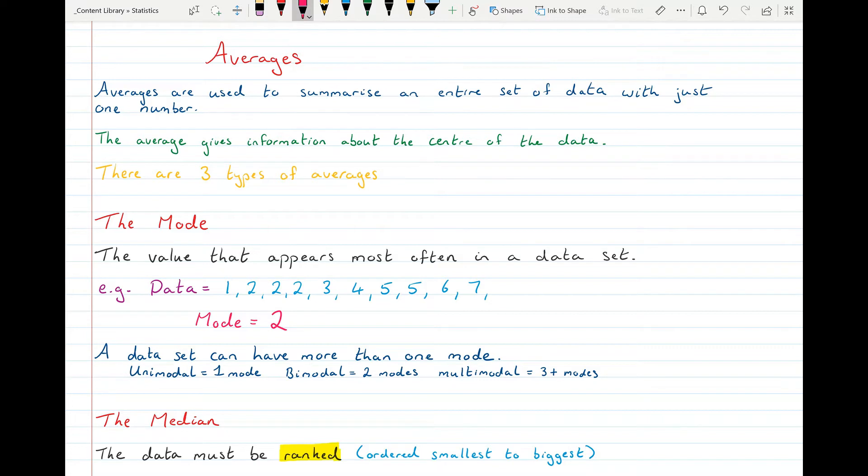And the mode might be a number that just appears once. So let's say if we're counting 1, 2, 3, 4, 5, 6, they're all modes because they all appear once. So there's no number that appears more than another one.